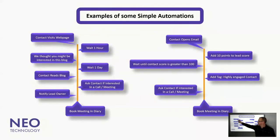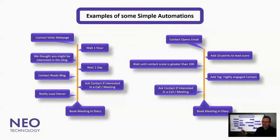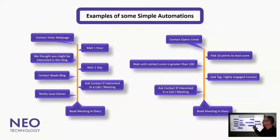So a prospect visits your web page, and you've tracked them — you've got their IP address, or you've driven them to the web page via an email. You've already captured that URL and domain, and you know who they are.